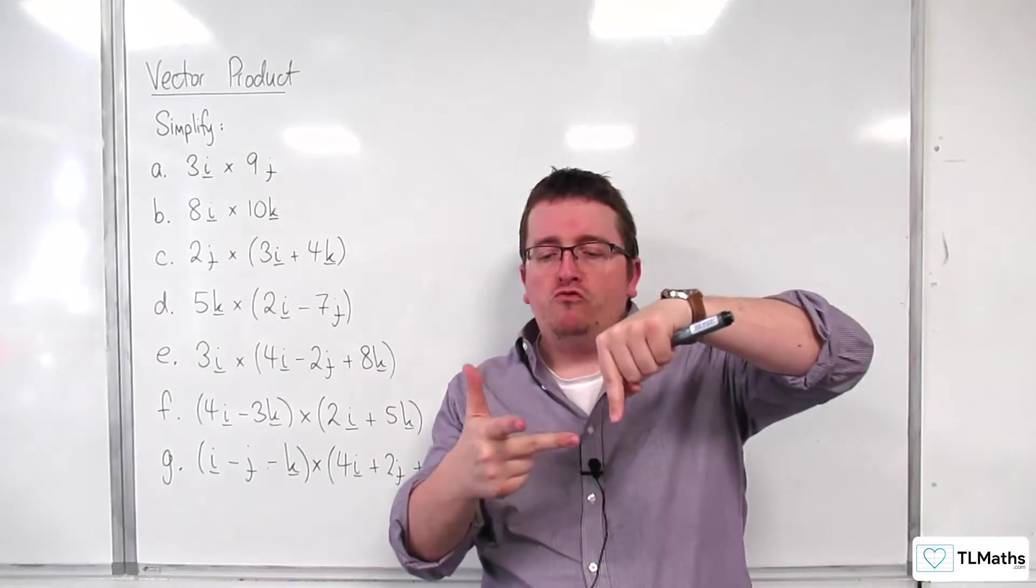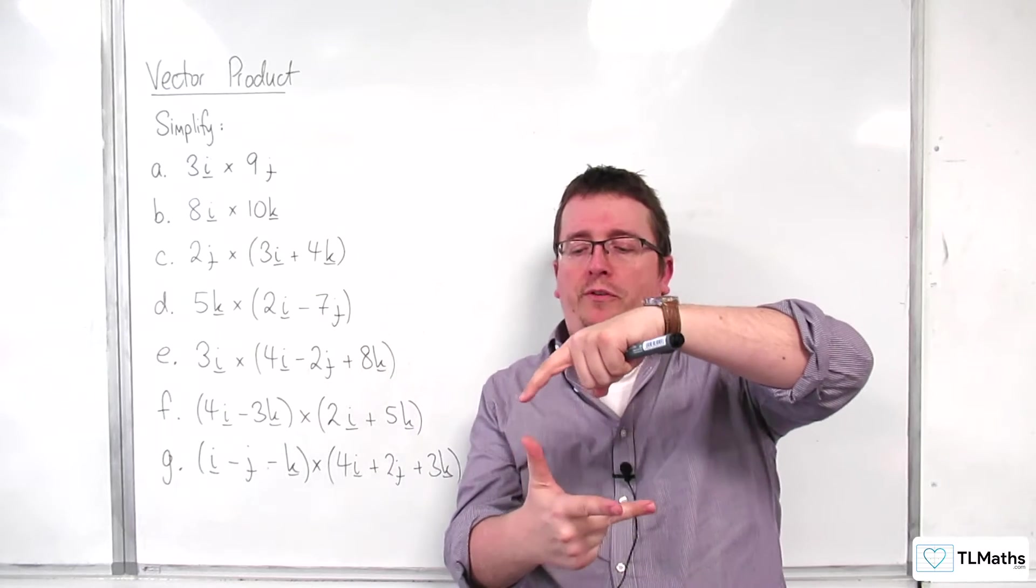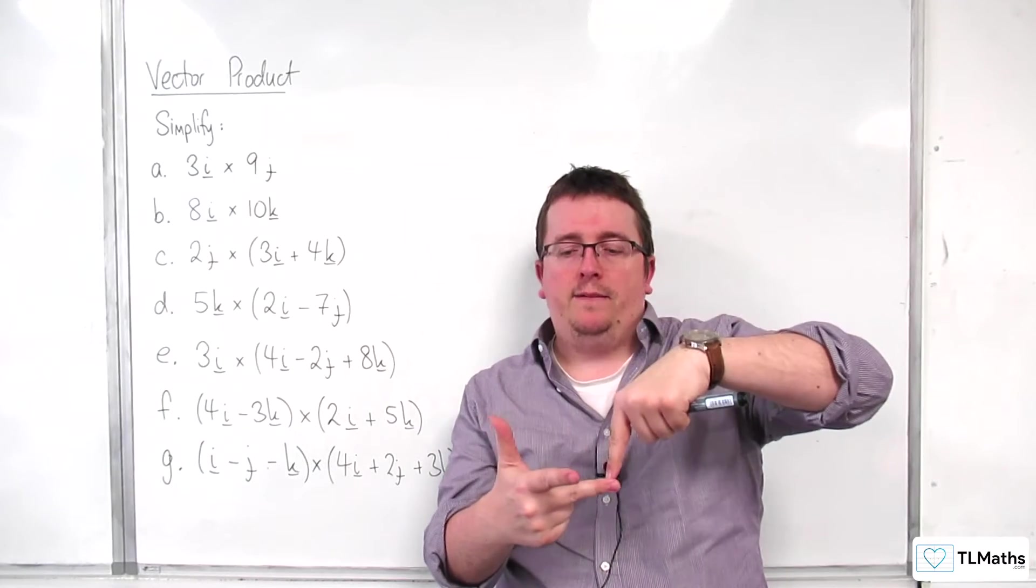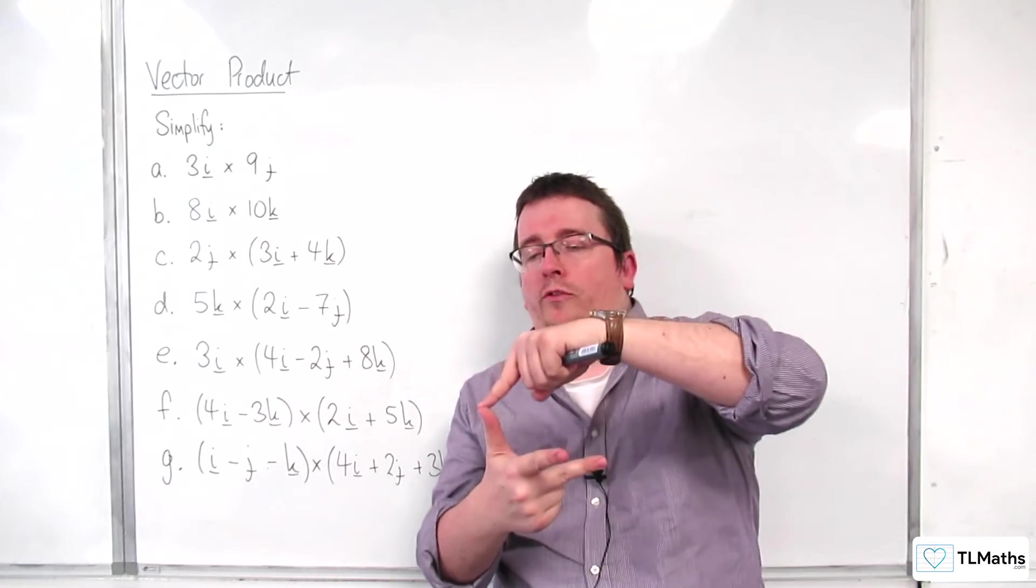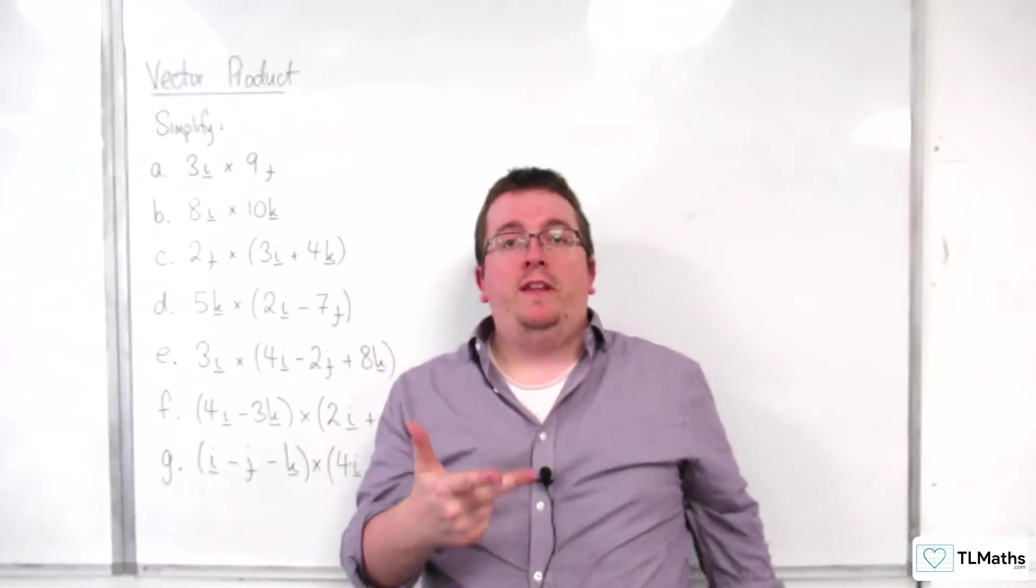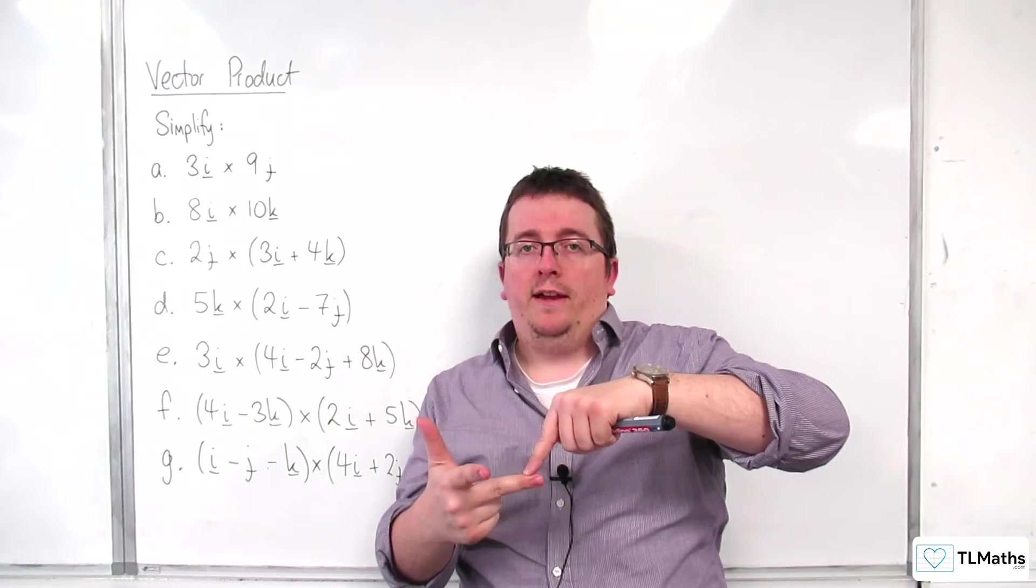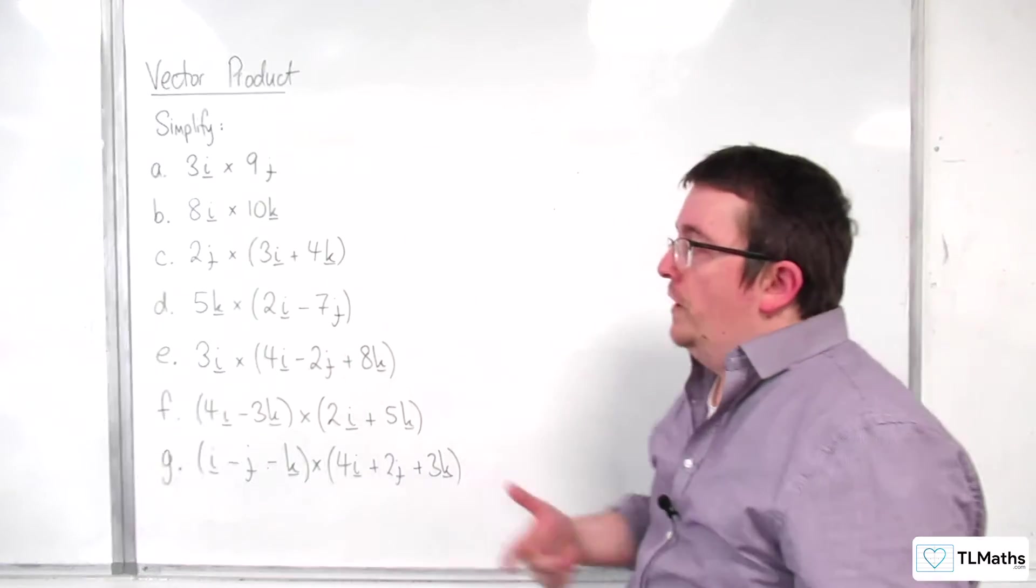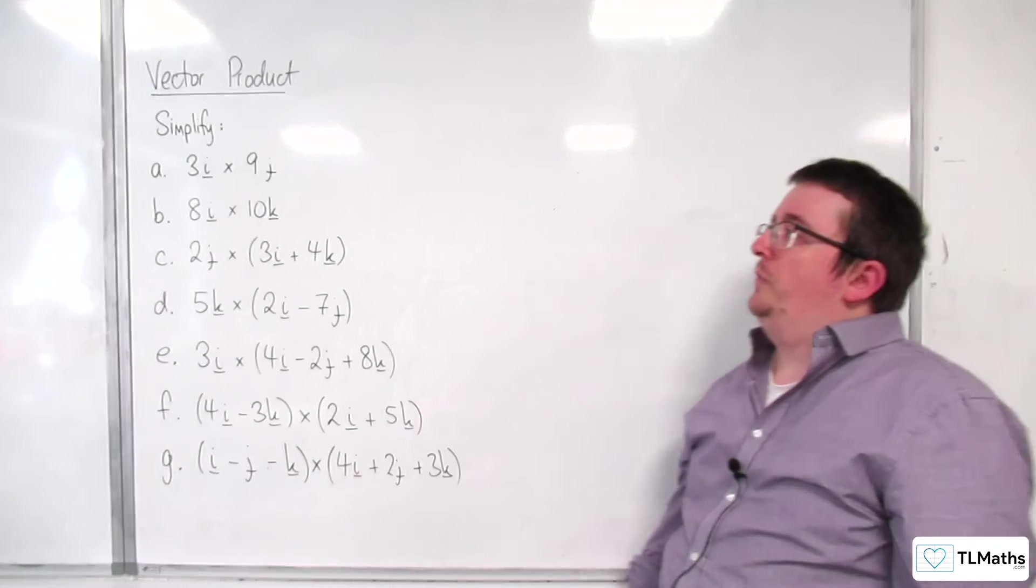And now, if you're going around anti-clockwise, then that is the correct process. So, i cross j is k. Then j cross k is i. k cross i is j. If at any point you reverse the direction, then you get negative. So, j cross i is minus k. So, if you reverse around going clockwise, then you are going to get negative. If you're going anti-clockwise, you're positive.